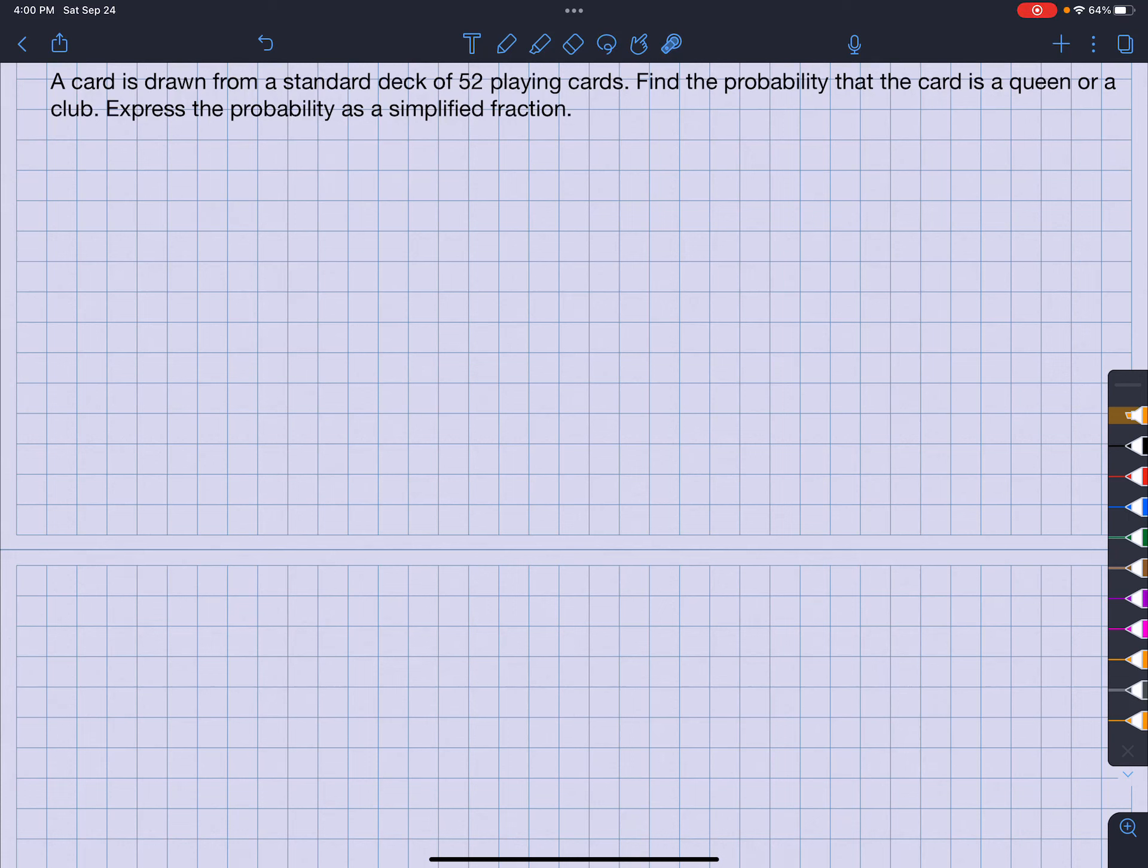So a card is drawn from a standard deck of 52 playing cards. Find the probability that the card is a queen or a club, right? And there is a queen of clubs, correct?